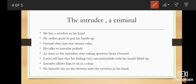The intruder has a revolver in his hand. He orders Gerrard to put his hands up. Gerrard obeys but remains calm. He talks to the intruder very politely. As soon as the intruder starts asking questions, Gerrard tells him that he is feeling very uncomfortable with his lifted hands.